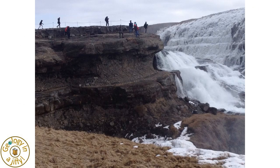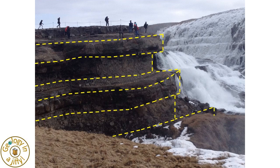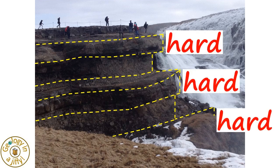If we look at this example of an occasional waterfall in Iceland, where a river only flows over the cliff when the ice melts, we can clearly see the alternating hard and soft layers — in this case, alternating lava flows and sedimentary deposits. The harder, more resistant lava flows protrude from the cliff face and the softer layers are more eroded into the cliff.